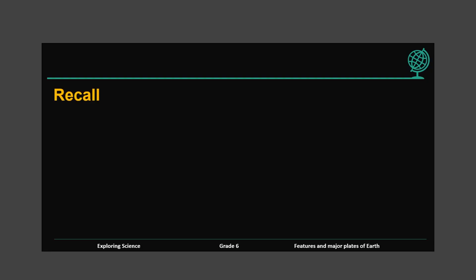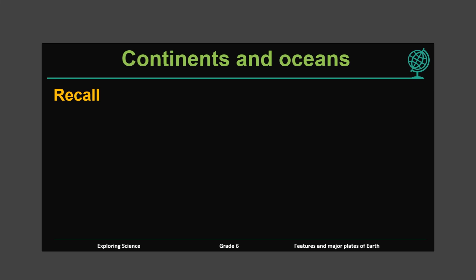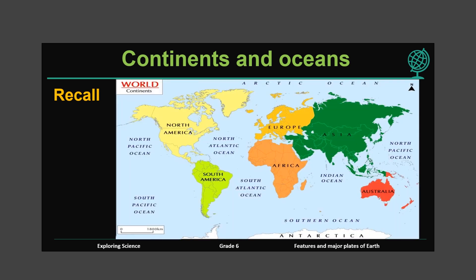Let's recall continents and oceans. There are seven continents and five major oceans in the world. Ocean covers more than 70% of the Earth's surface. What continent do we live in? Let's look at this world map. That's the biggest continent, which is Asia, on the Indian Ocean. The second biggest continent is Africa. Europe is next to Asia.